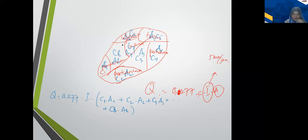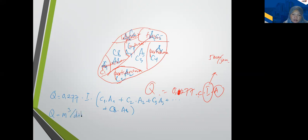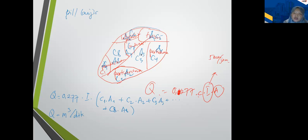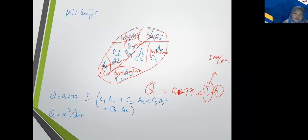Jadi kalau tutupan lahannya lebih dari satu jenis, koefisiennya masing-masing dikalikan luas tutupan lahan jenis tersebut, nanti dapat nilai C gabungan dalam meter kubik per detik. Ini pindah ke link kedua. Ini untuk yang rasional praktis.